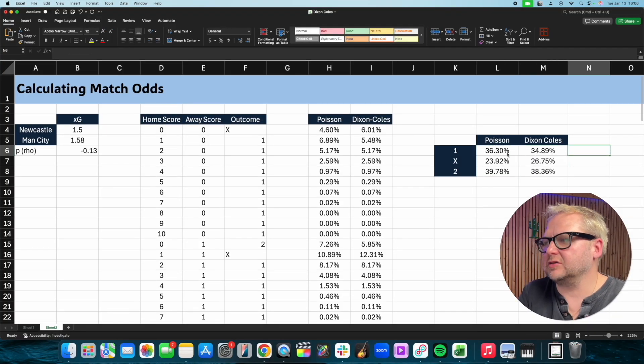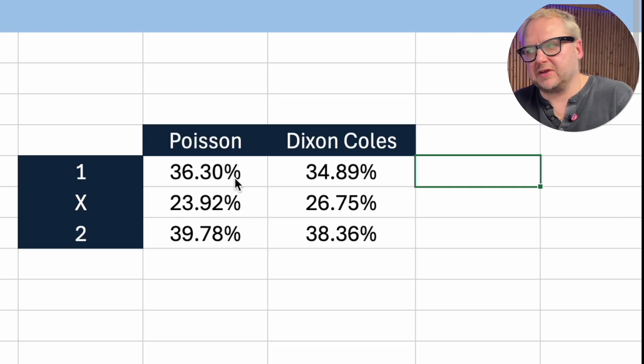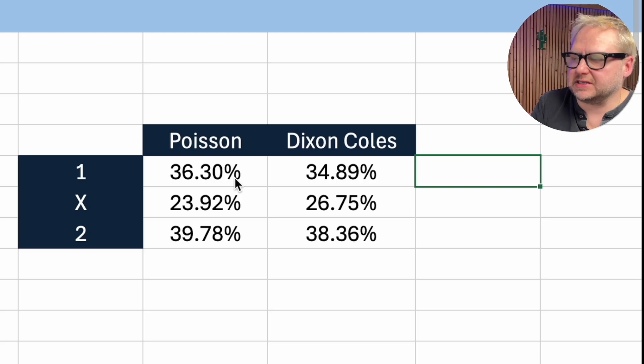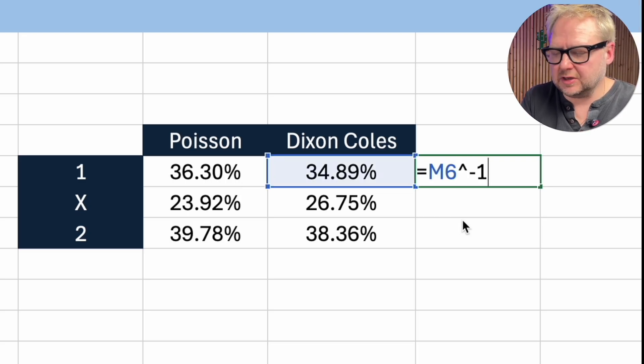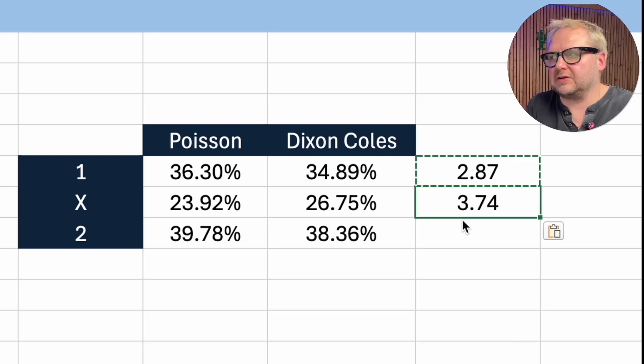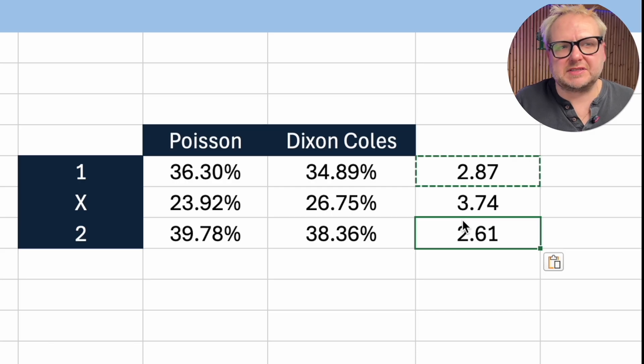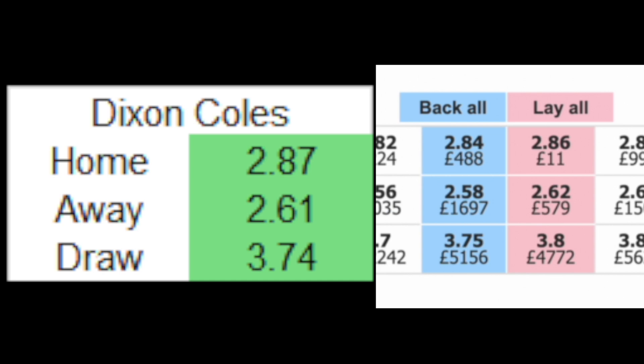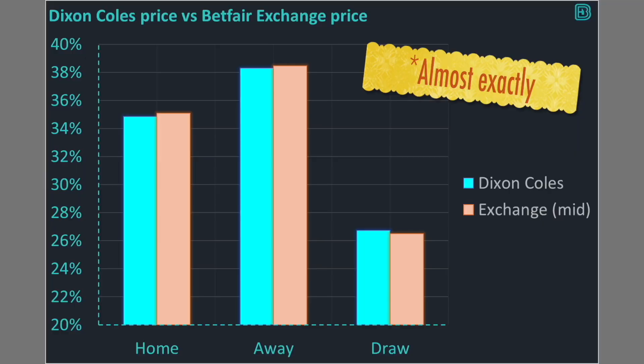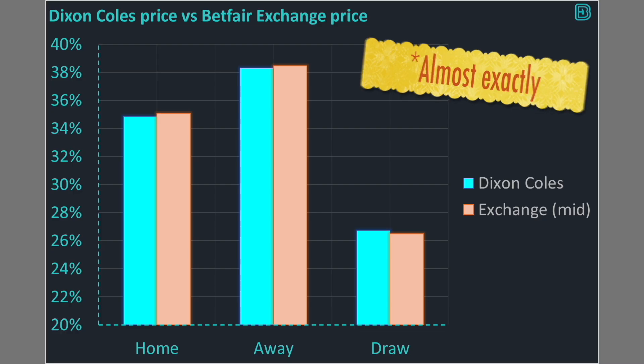So now let's see what match odds probability we get with the Dixon-Coles method. Copying over from Poisson to Dixon-Coles, we now see Dixon-Coles estimates the probability of Newcastle at 34.9%, the draw at 26.8%. Converting to decimal odds: 2.87 for Newcastle, 3.74 for the draw, and 2.61 for Manchester City. Those numbers align perfectly with the efficient exchange market. So we can take an XG of 1.50 for Newcastle and 1.58 for Manchester City, and using a rho number of minus 0.13 we get exactly the same numbers as on the exchange.